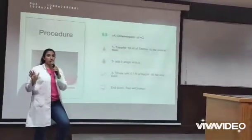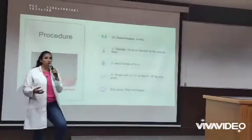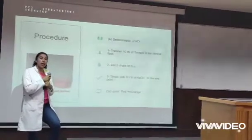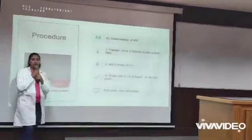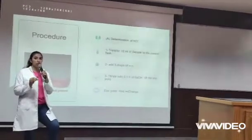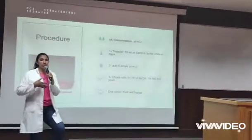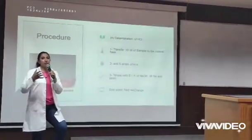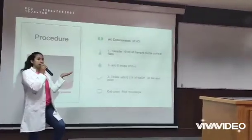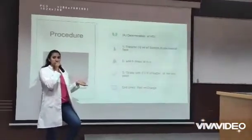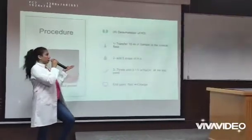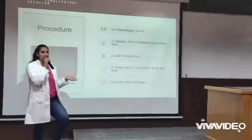The end point is reached when the color changes from red to orange. We use methyl orange as an indicator here because its pH range is from 3.3 to 4.4. It changes its color in this acidic range, just like HCl. Therefore, it's suitable for the determination of HCl only.